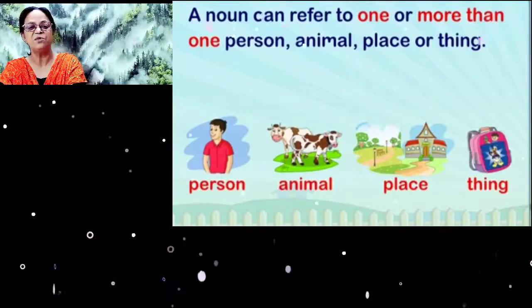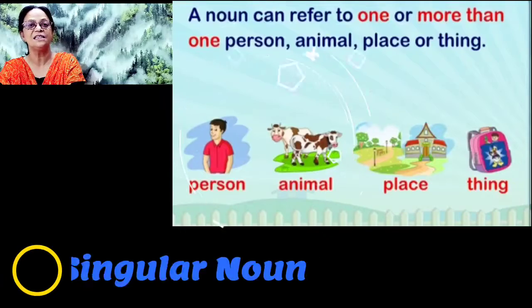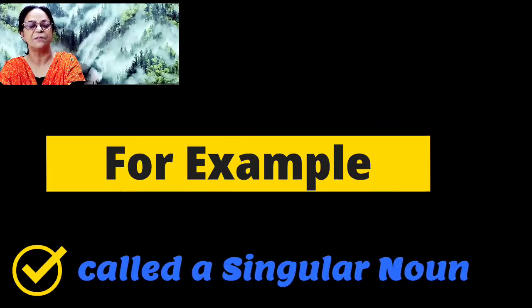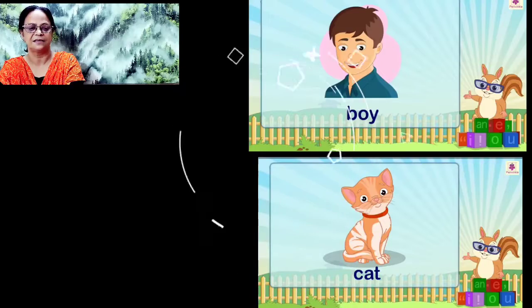A noun that names one person, animal, place or thing is called a singular noun. For example, a boy, a cat.